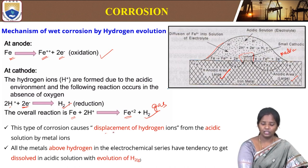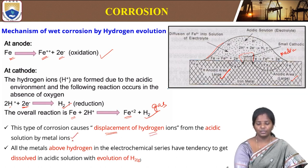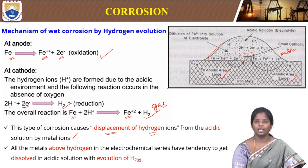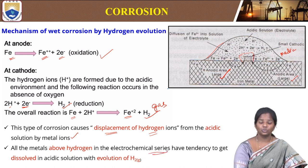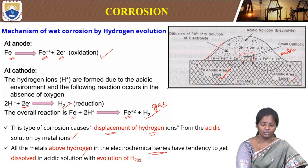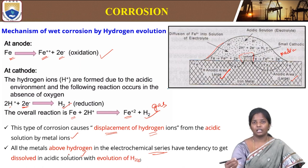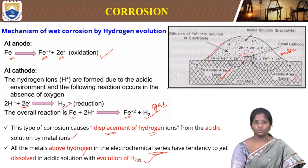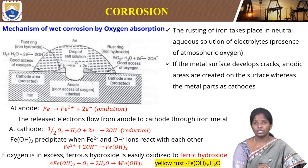This type of corrosion occurs due to displacement of hydrogen ions from the acidic solution. All the metals above hydrogen in the electrochemical series have a tendency to get dissolved in the acidic medium with hydrogen evolution. Then let us see the mechanism of wet corrosion by oxygen absorption — the rusting of iron takes place in neutral aqueous electrolyte solution in the presence of atmospheric oxygen.